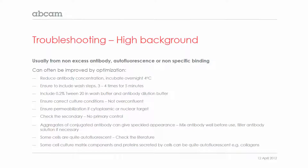Check that you have the correct culture conditions and that the cells are not overconfluent. Ensure there's permeabilization if it's a cytoplasmic or nuclear target. This sounds counterintuitive, but from experience, if permeabilization isn't done when required — for example for a nuclear target — you may actually get a lot of excess staining rather than no staining. So make sure you permeabilize if you need to. Check the secondary antibody by including a no-primary control to make sure it's not binding nonspecifically.